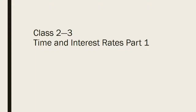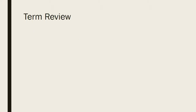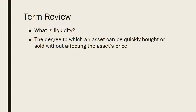This is the first of two classes that we're spending on time and interest rates. Let's review a term from what we've learned previously, which is liquidity. Liquidity is the degree to which an asset can be quickly bought or sold without affecting the asset's price. So if you have a home and you need to sell it tomorrow, you'll probably need to discount the price significantly.